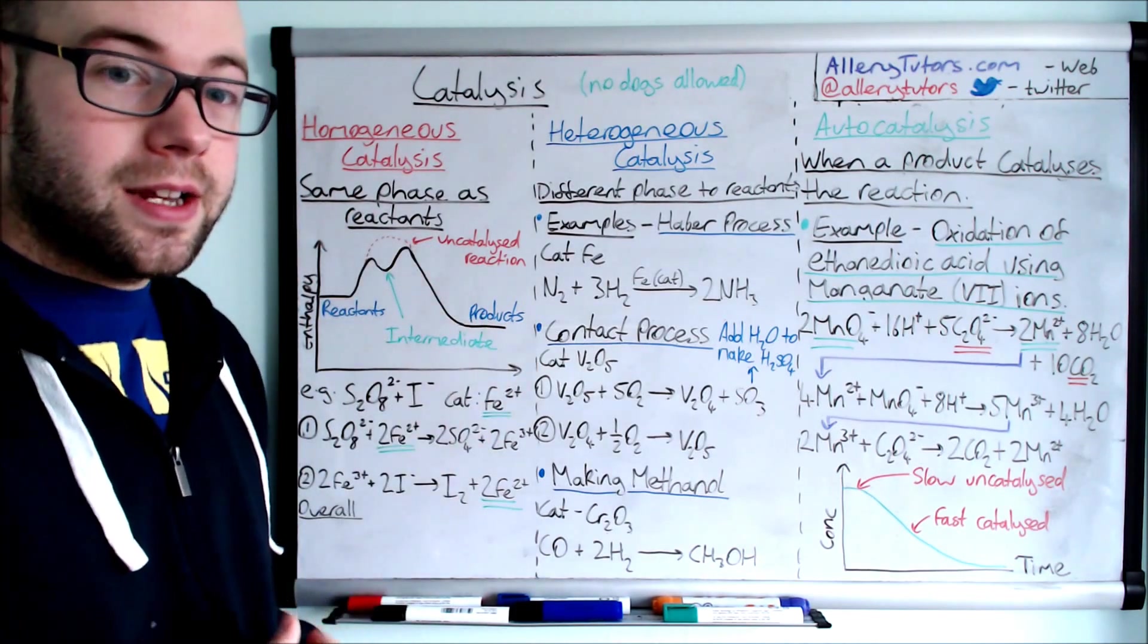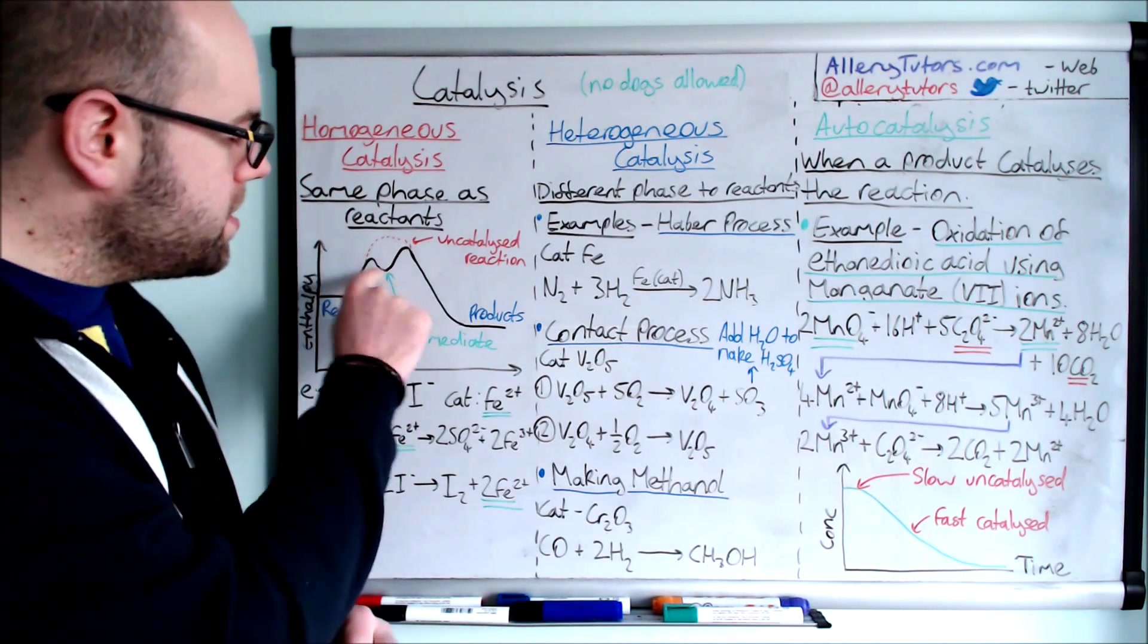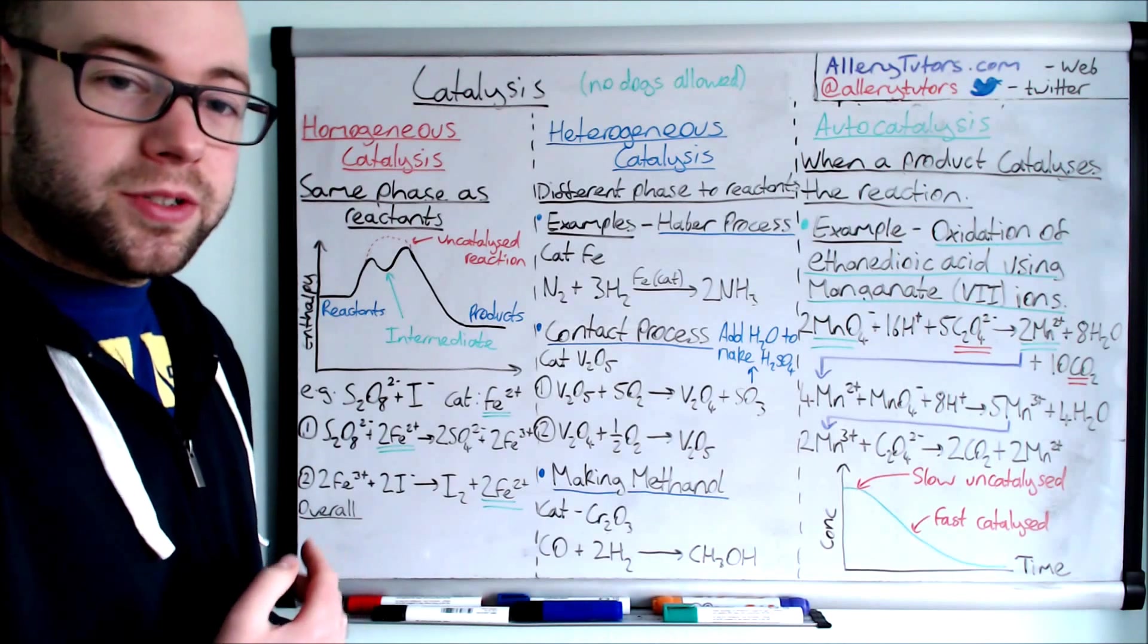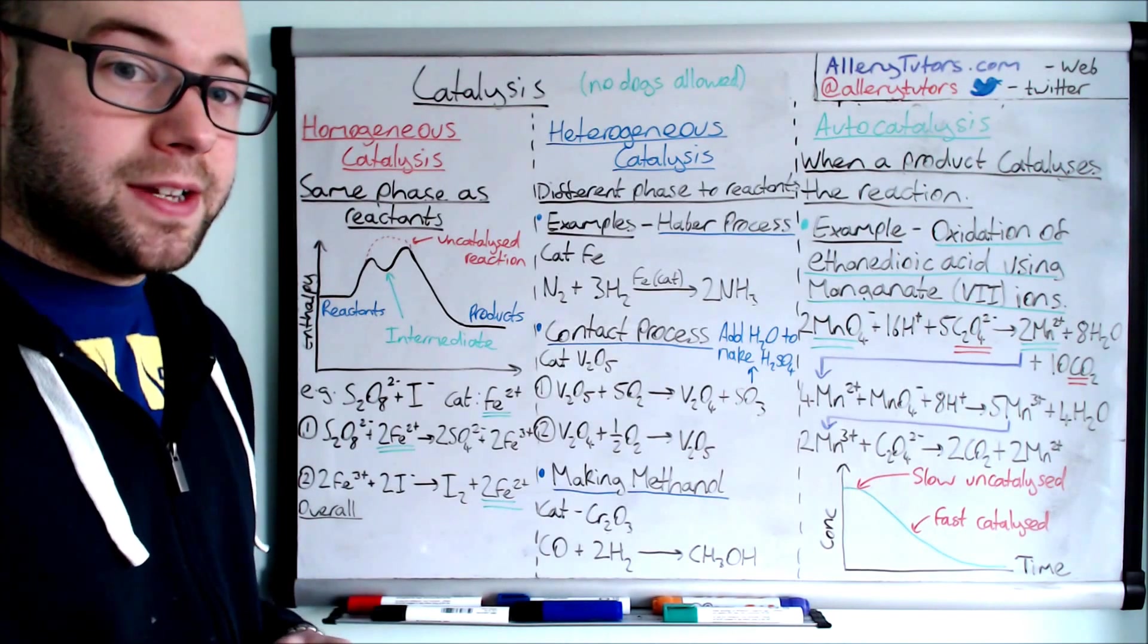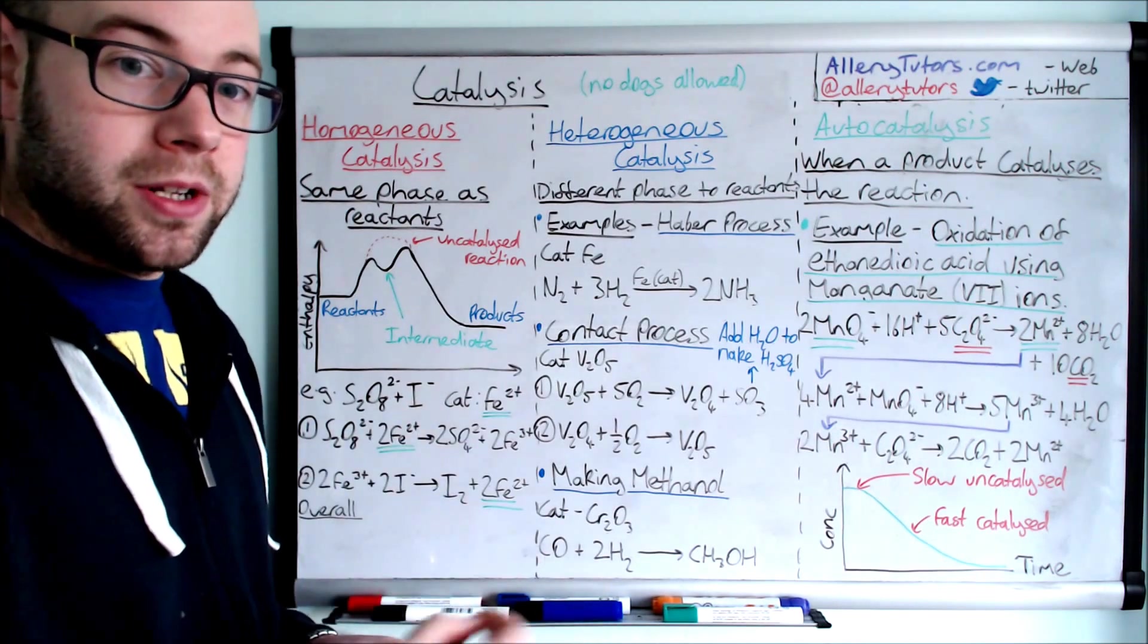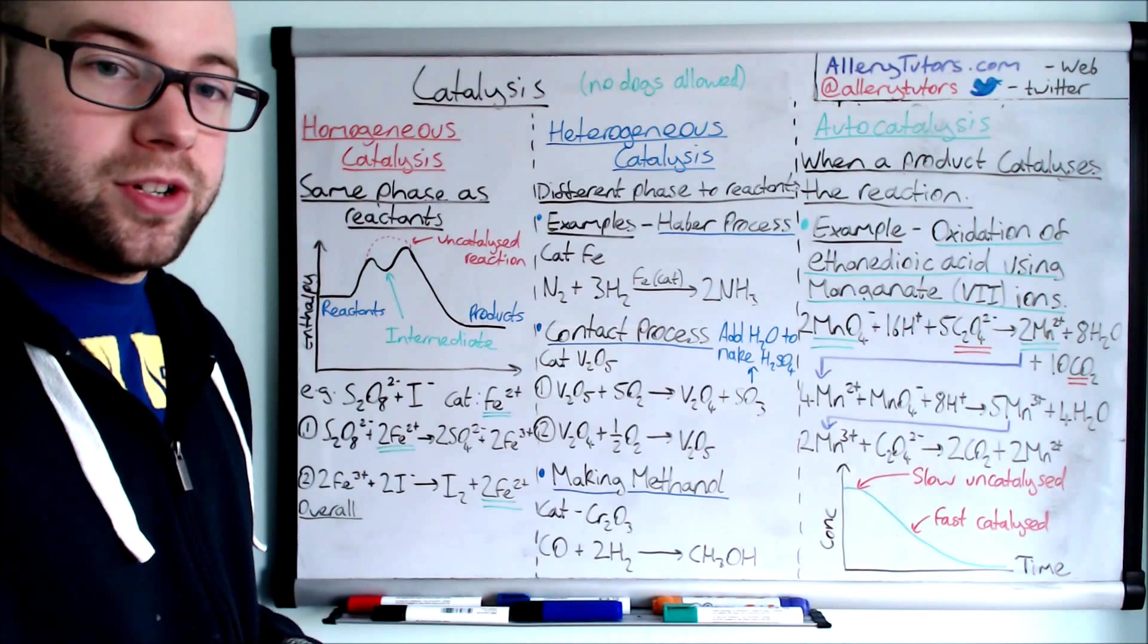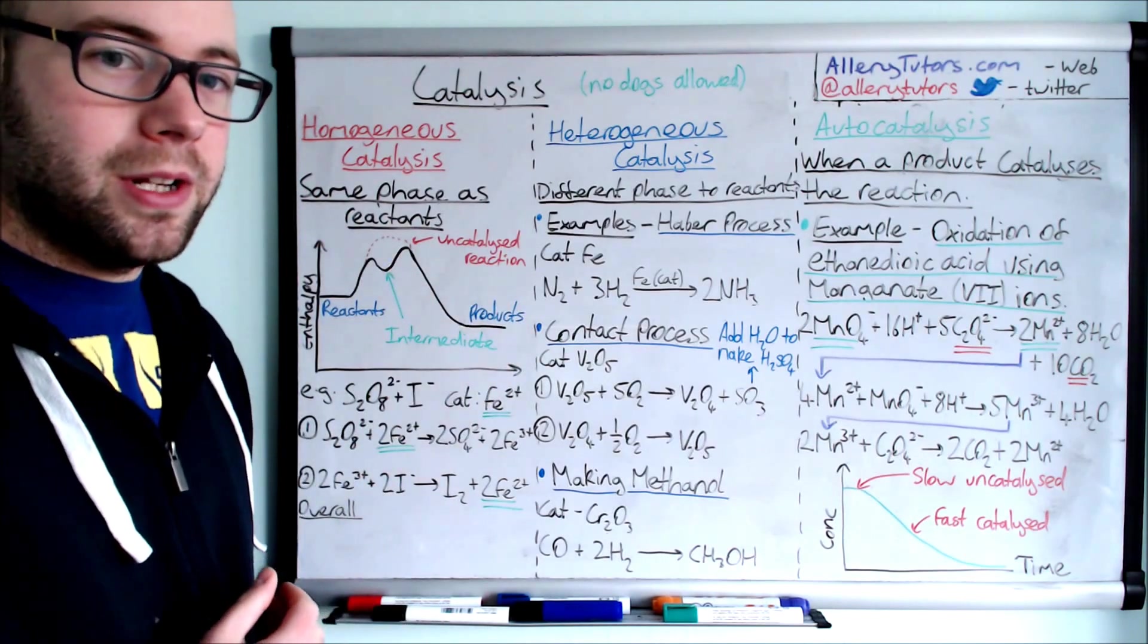But with a catalyst, we actually lower the activation energy and you don't need as much energy for the reaction to occur. You can see here we get this double bump profile. In the middle bit, we've got something called an intermediate. A homogeneous catalyst works by reacting with the reactant initially, forming an intermediate molecule, and then that intermediate reacts with another part of the reaction to form a product. I'll show you what I mean with an example.